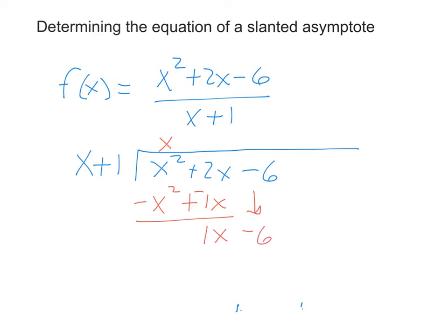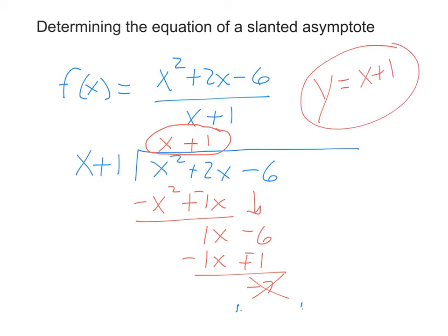What do you take times x to get 1x? A positive 1. 1 times x is 1x. 1 times 1 is 1. Change the signs and add down. Negative 7 is our remainder, and for this process, we don't care about the remainder. The equation of the slanted line that goes through the graph that the graph gets closer to is your result up at the top. So y equals x plus 1 is your slanted asymptote. If you put that in your calculator along with this original, you can actually see the graph of this function get closer to y equals x plus 1.